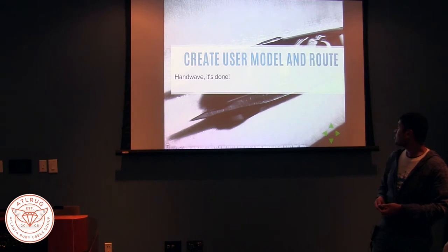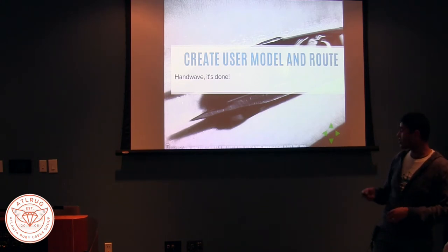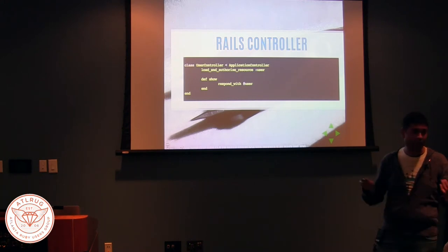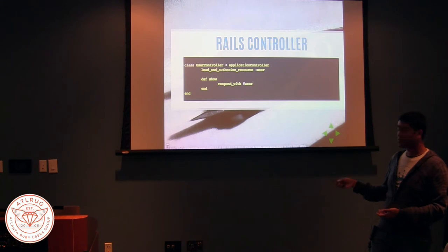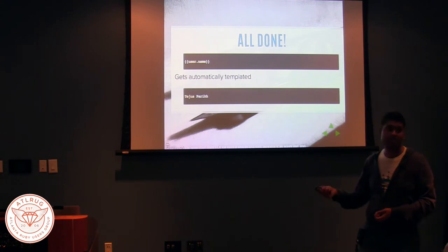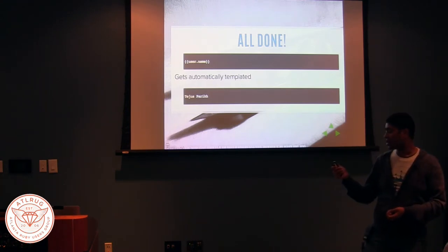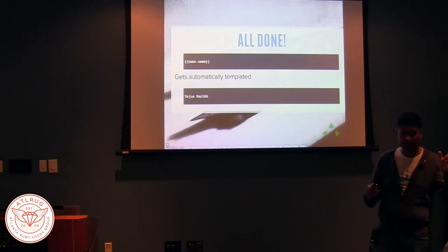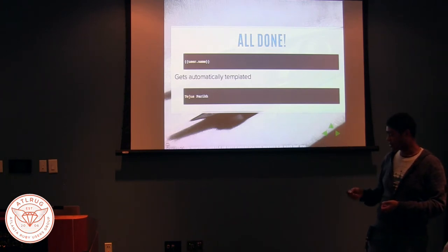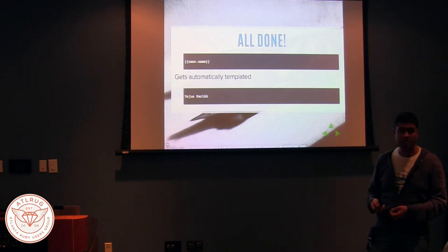Finally, you create the user on the Rails side — you can just do a generate. If you're using Devise, you load an authorized resource and that's all the Rails code you get to write: 'respond with user.' Because of the way I set up my controller, my Angular route, and my Rails routes, when someone loads that page with the curly syntax, it'll change the template from 'user.name' to 'tages.break' — assuming that's what the user name was. We're using Angular 1.2 and haven't upgraded to 1.3 yet.